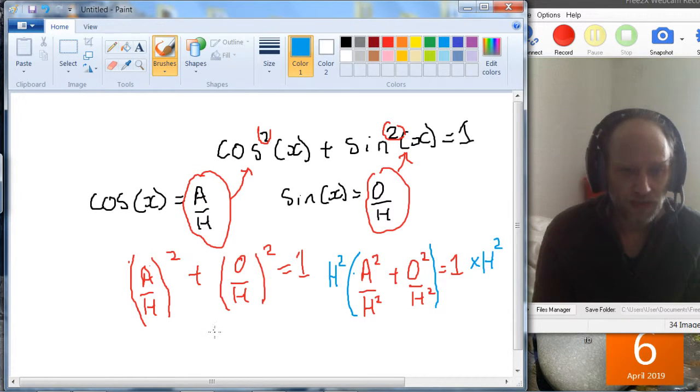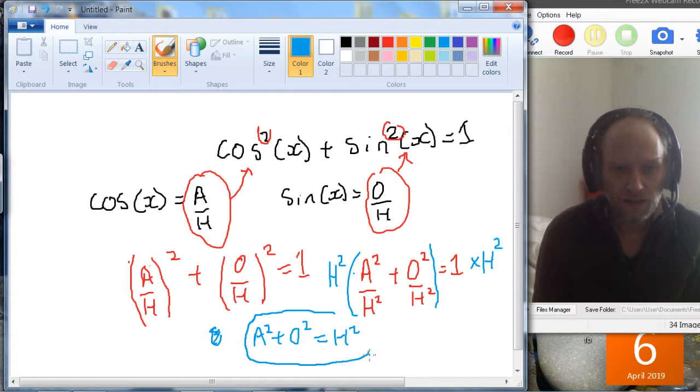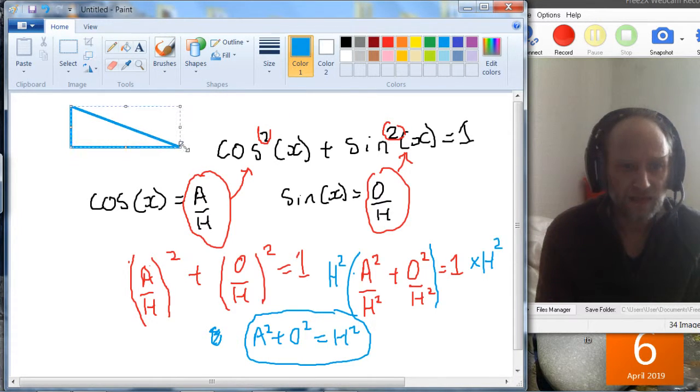And what do we get? We get a² + o² = h². And this is true for any right angle triangle.